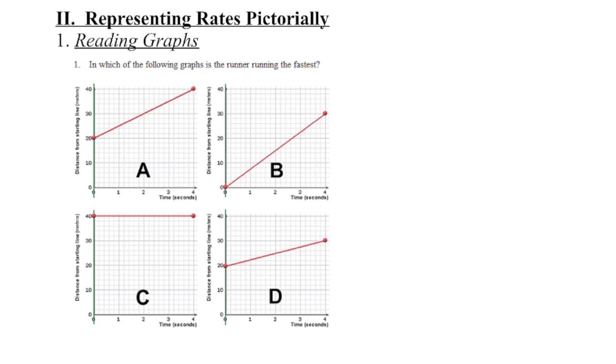If we look at A, the person begins 20 meters away from the start line and ends up 40 meters away. They changed a distance of 20 meters in 4 seconds.